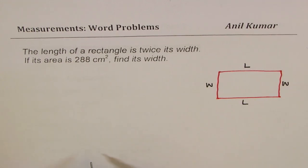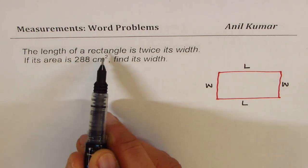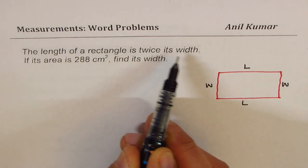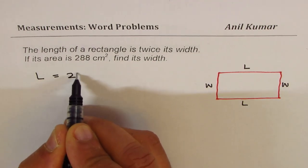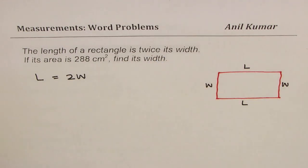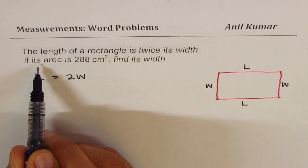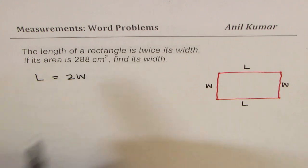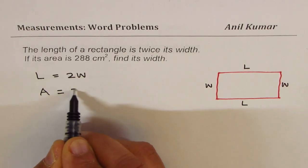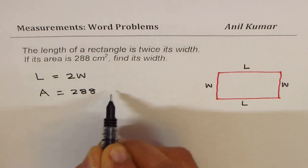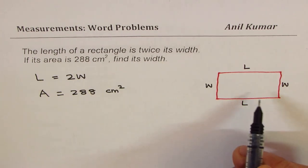length be L. What we are given here is length of a rectangle is twice its width. That means length L is two times width W, right? That is the meaning of twice its width. Now second statement is if its area is 288 centimeters square. Area is given to us as 288 centimeters square. Find its width.